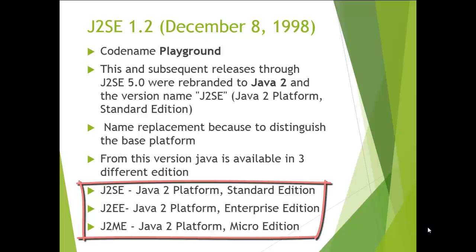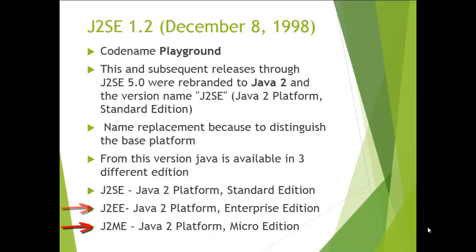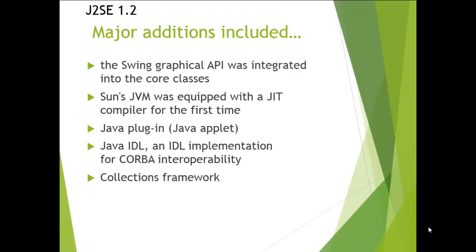From this version, Java became available in three different editions: J2SE (Java 2 Platform Standard Edition), J2EE (Java 2 Platform Enterprise Edition), and J2ME (Java 2 Platform Micro Edition). Standard Edition is used to develop console-type and Windows-type applications, Enterprise Edition is used for web applications, and Micro Edition is used for mobile or handheld device applications.